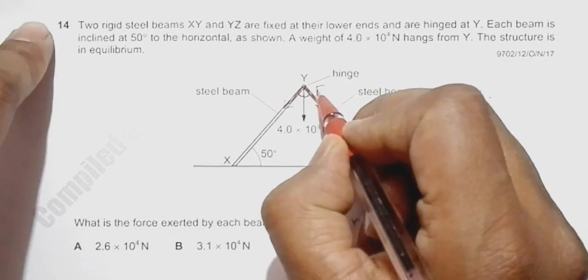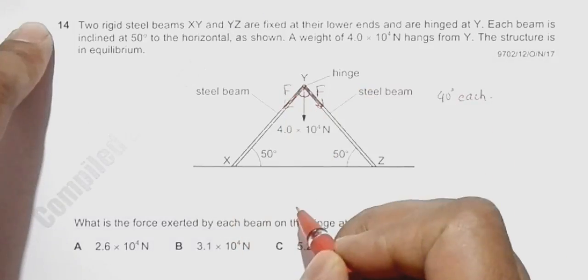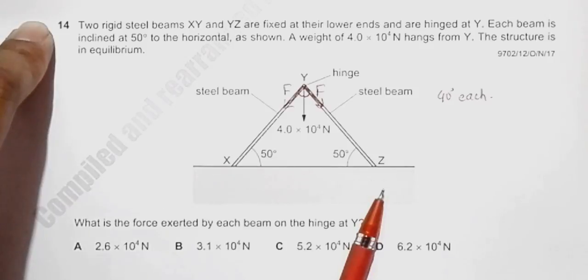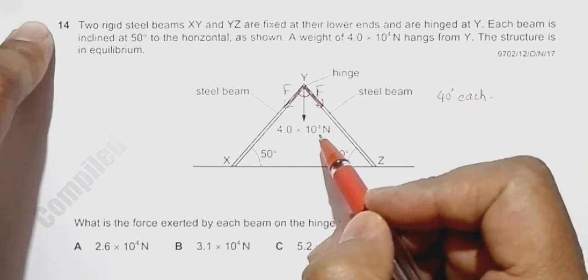So let us name them as F and F. This 4 × 10^4 Newton should be the resultant of the two forces.